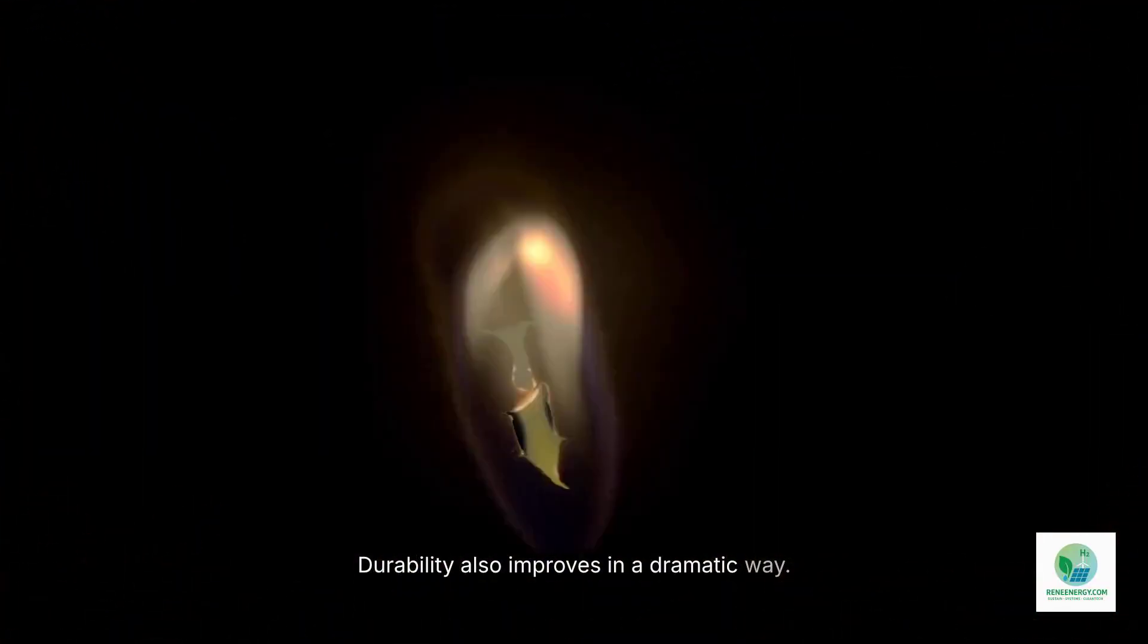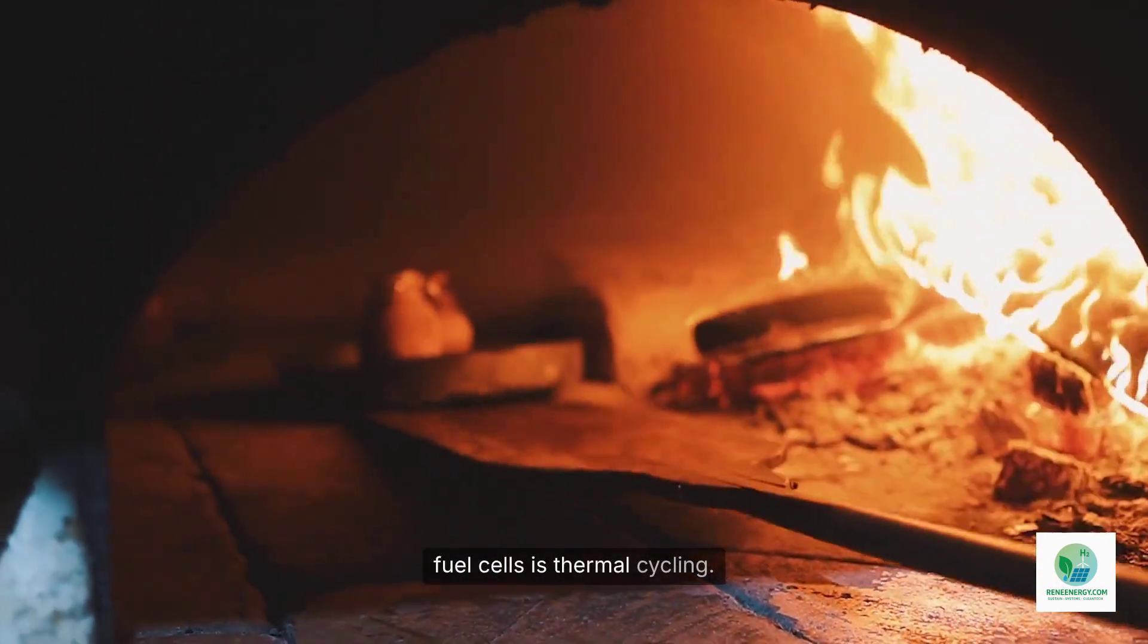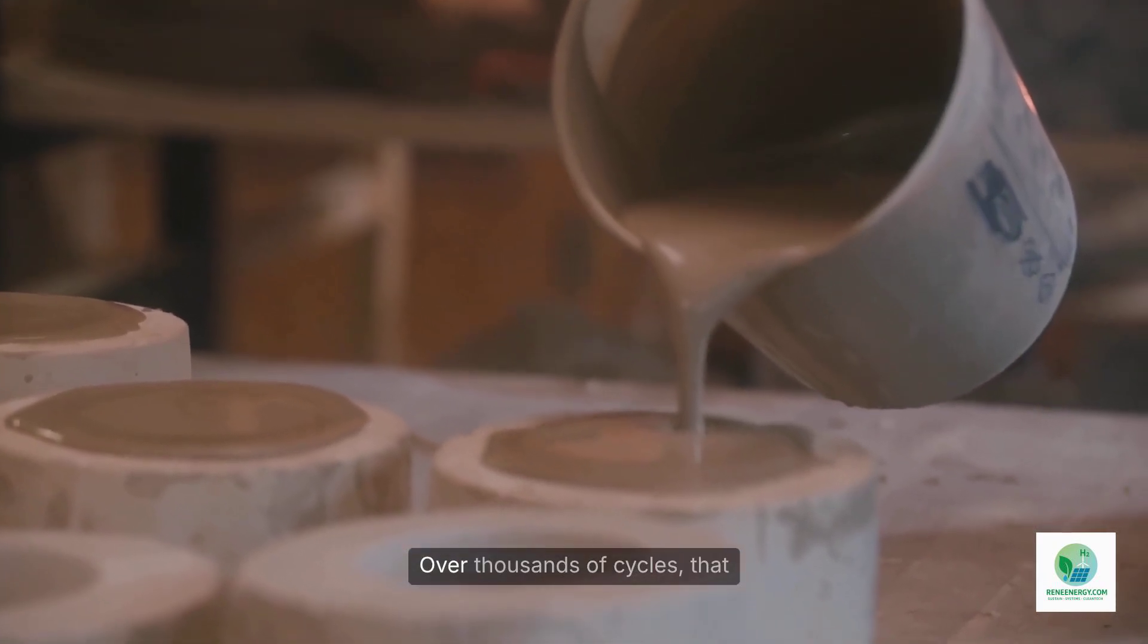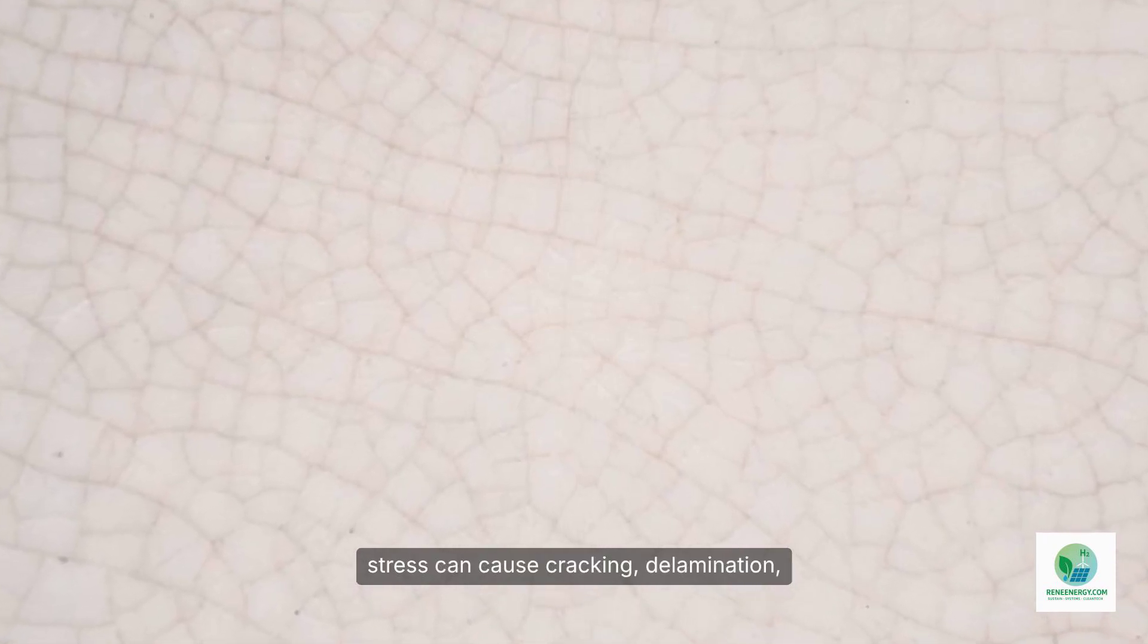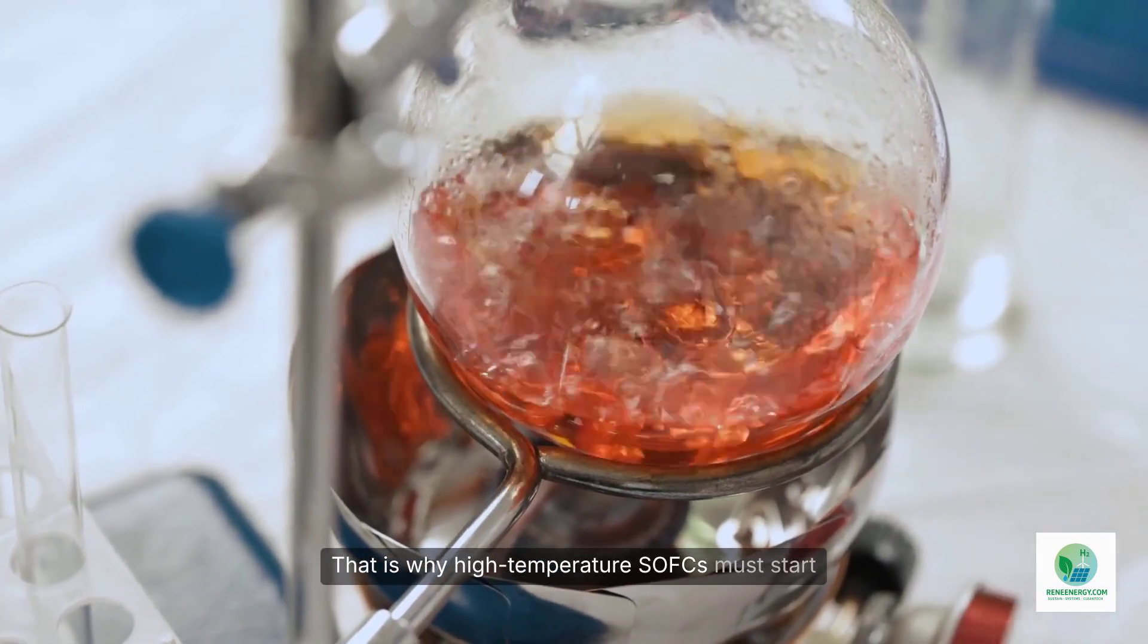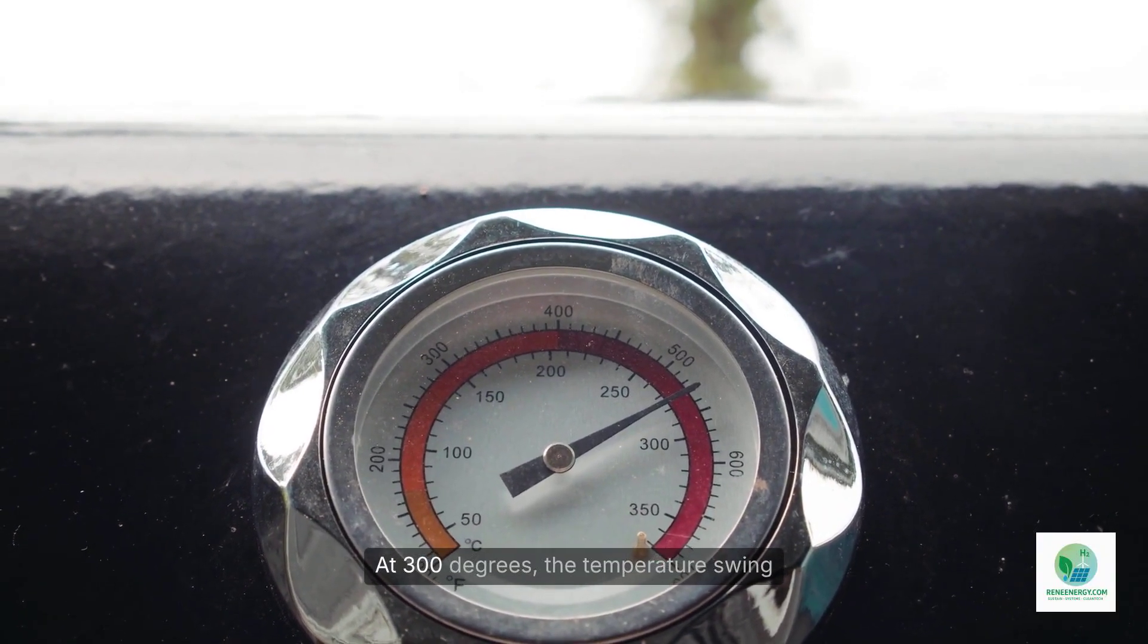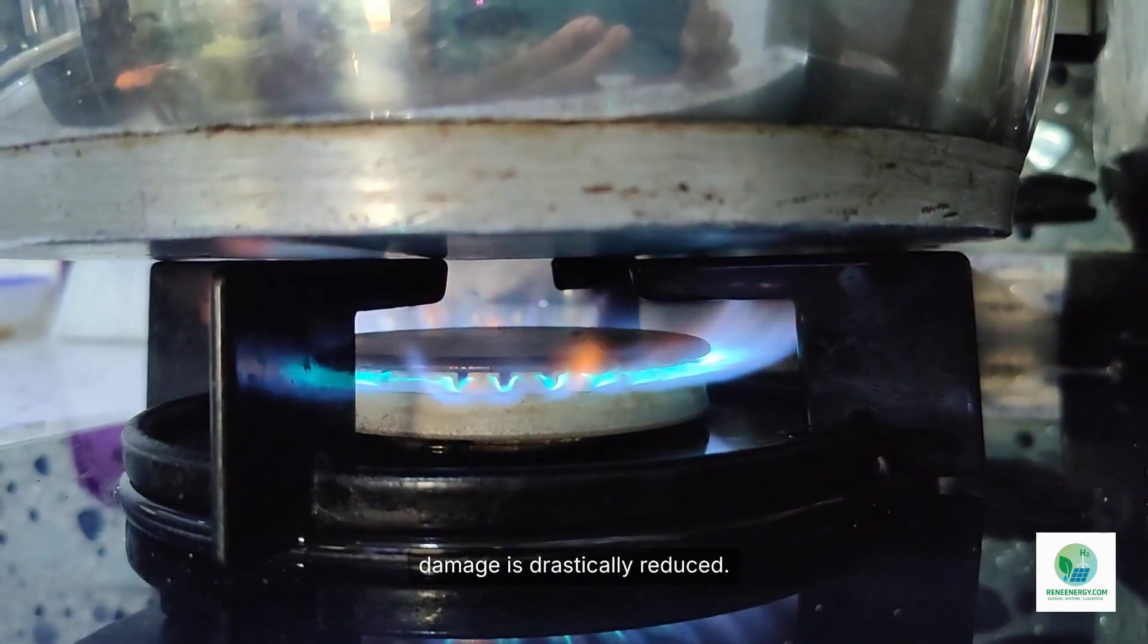Durability also improves in a dramatic way. One of the main problems with high-temperature fuel cells is thermal cycling. Every time you heat a ceramic from room temperature to 800 degrees and back, it expands and contracts. Over thousands of cycles, that stress can cause cracking, delamination, and performance loss. That is why high-temperature SOFCs must start and stop slowly, often taking an hour or more to reach stable operating temperature. At 300 degrees, the temperature swing is much smaller, and the risk of thermal damage is drastically reduced.